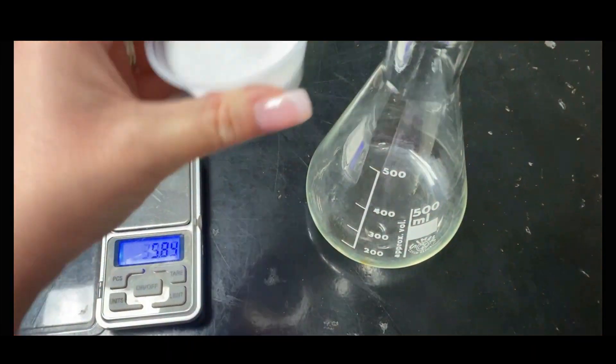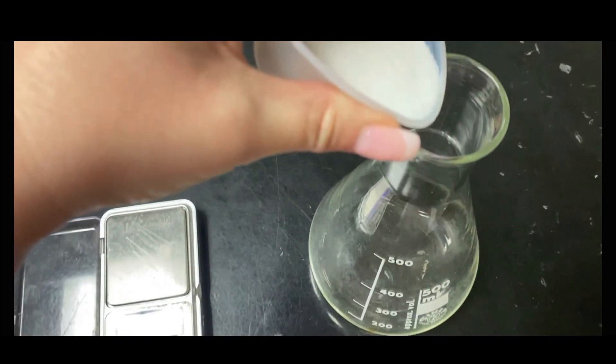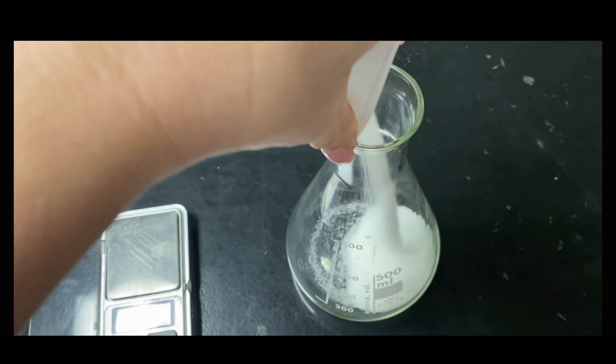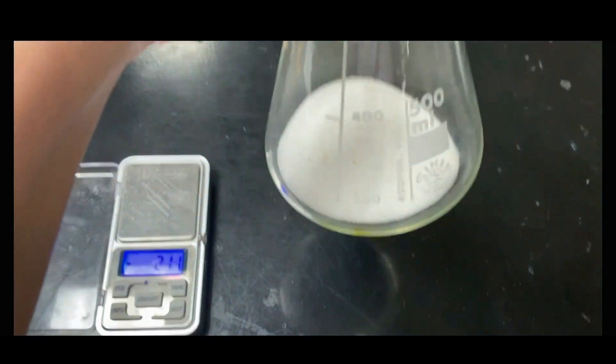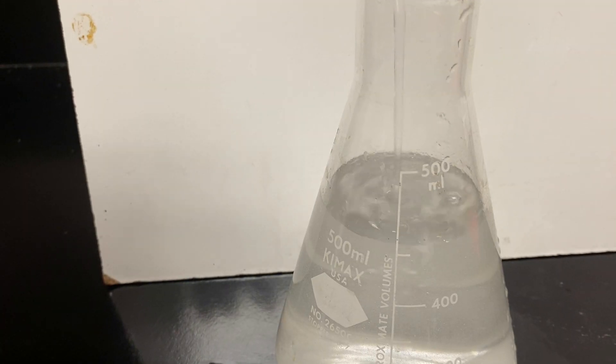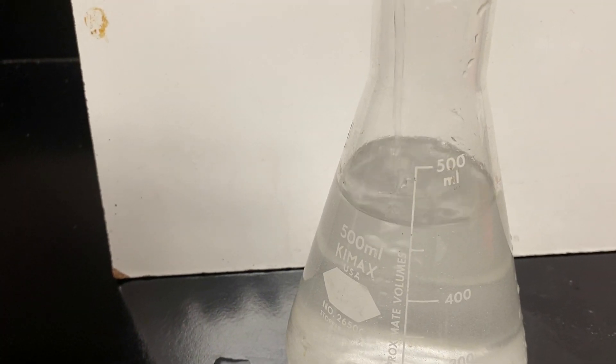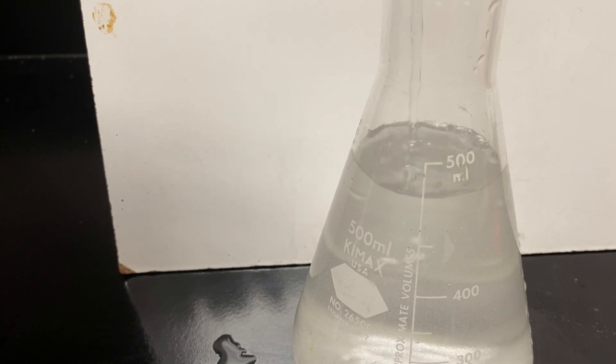So once I get that measured out, I'm going to put it in the bottom of my flask. A round bottom would be perfect for this but I don't have one, so a flask is the next best thing. And then you're going to fill it up to 0.5 liters, which is equivalent to 500 milliliters of water.